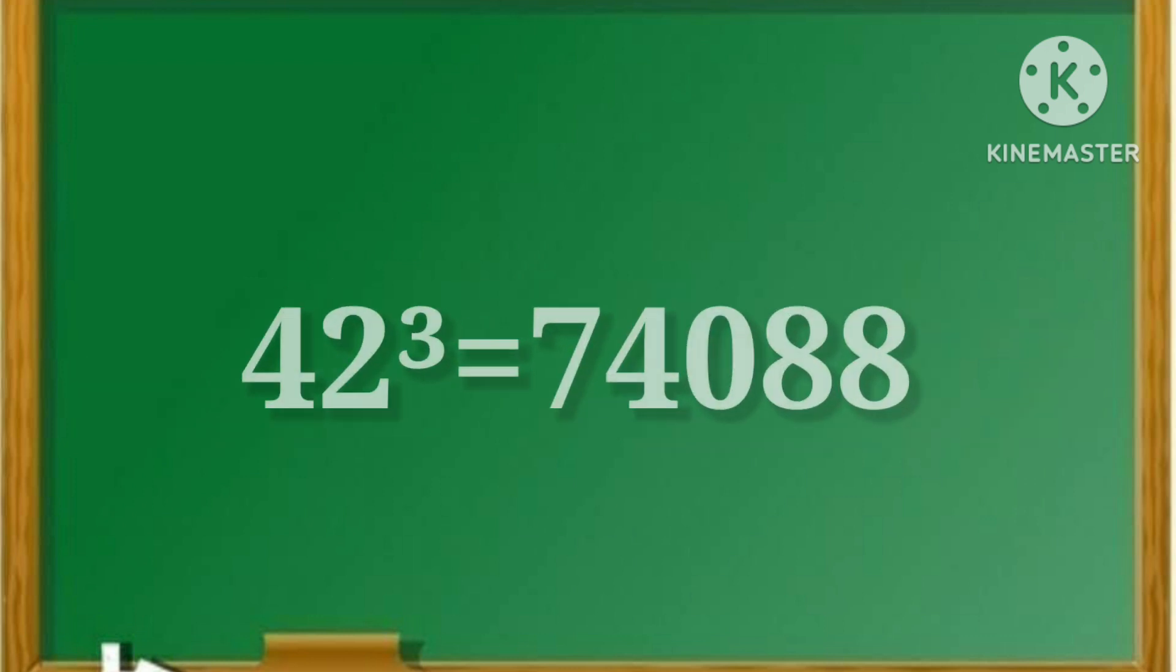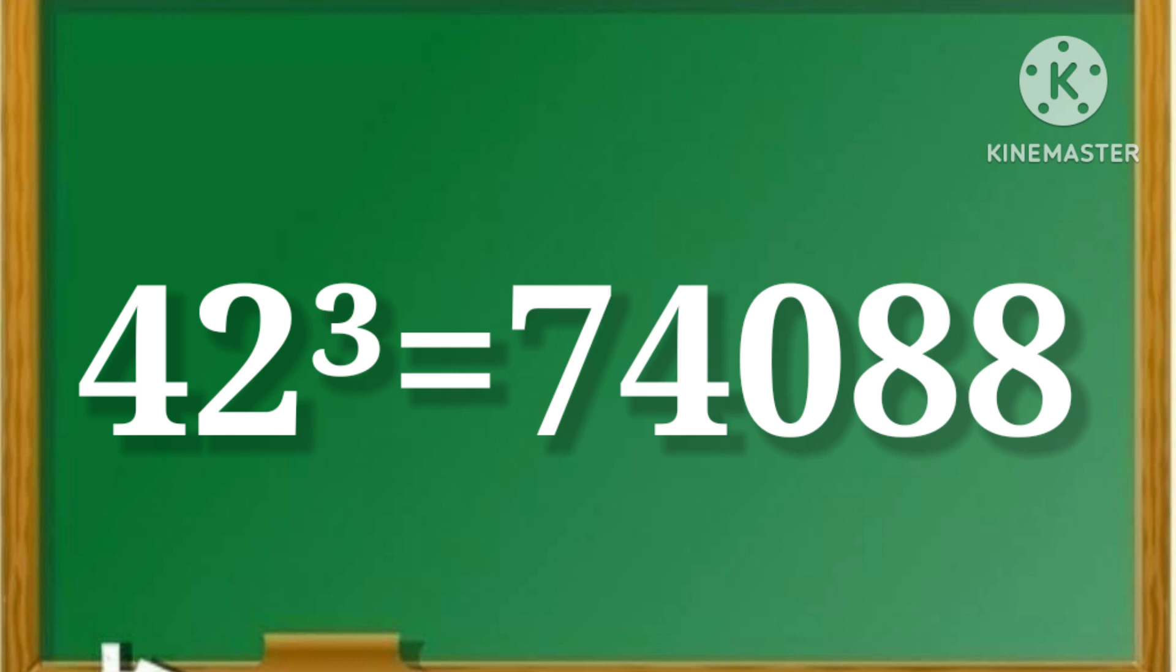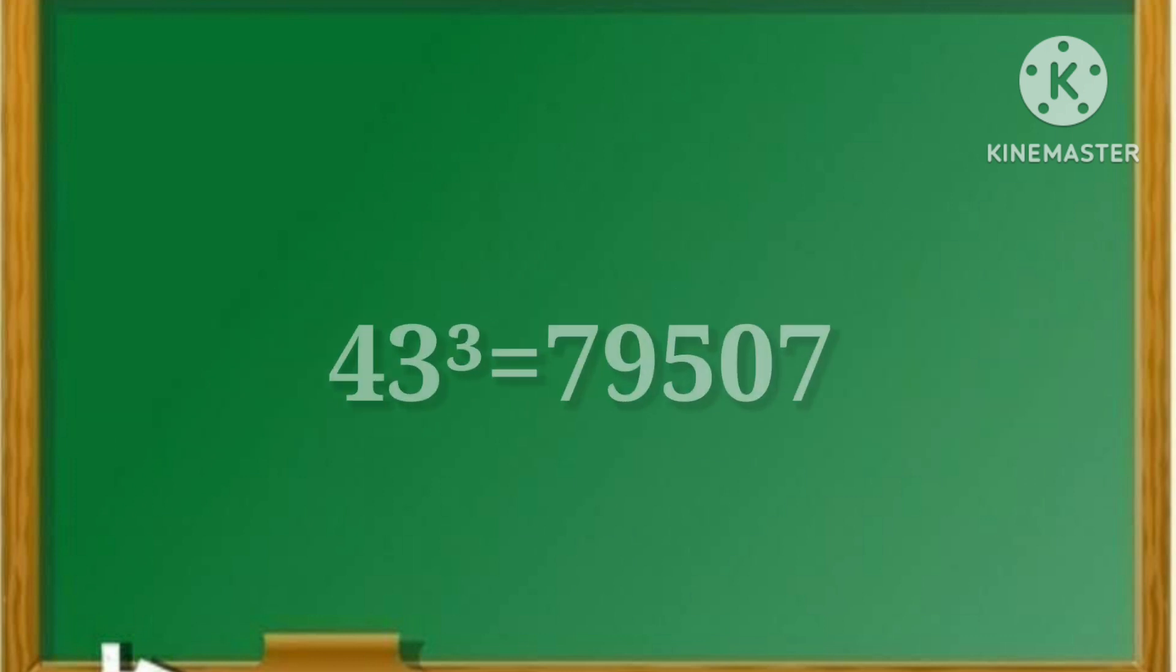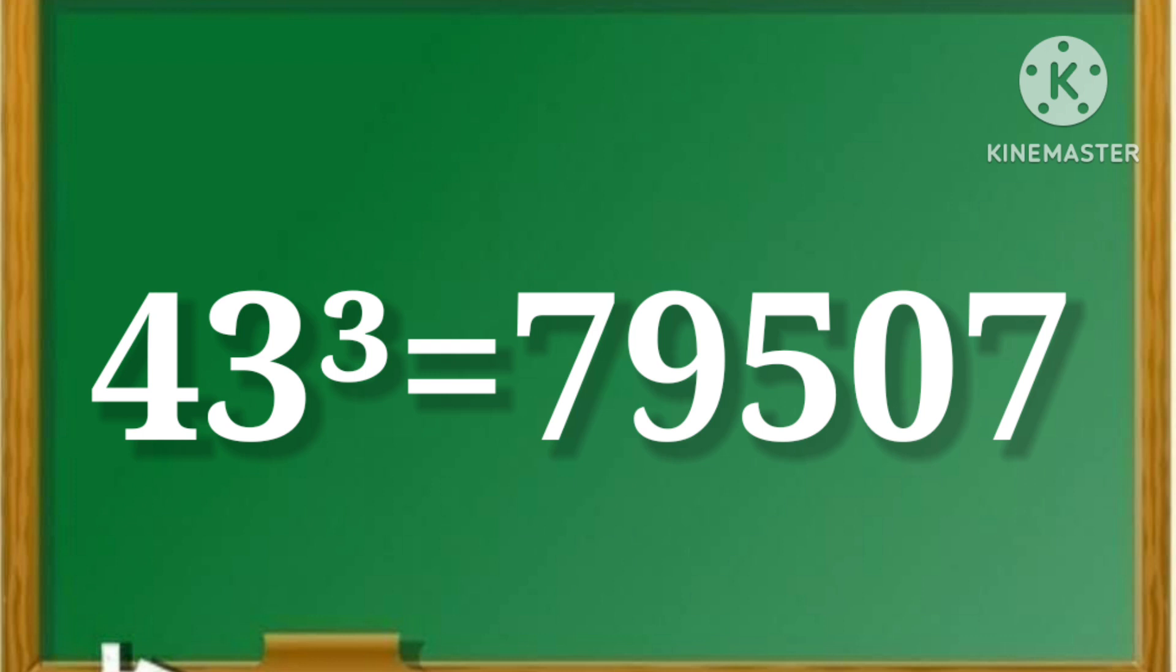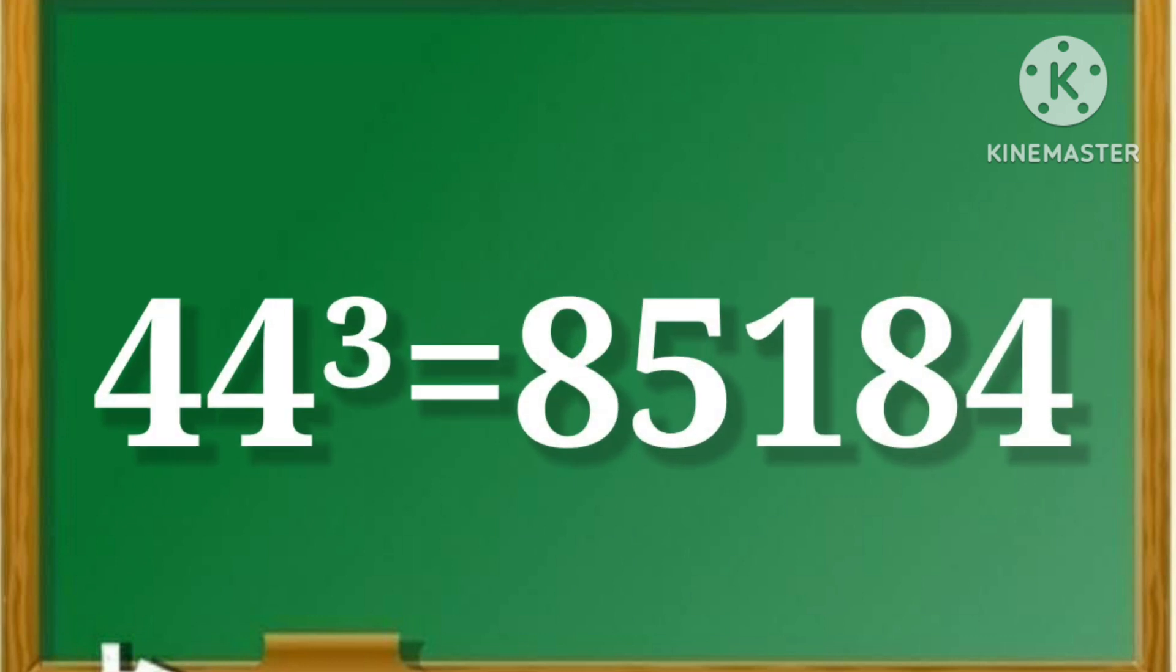42 cube is equal to 74,088. 43 cube is equal to 79,507. 44 cube is equal to 85,184.